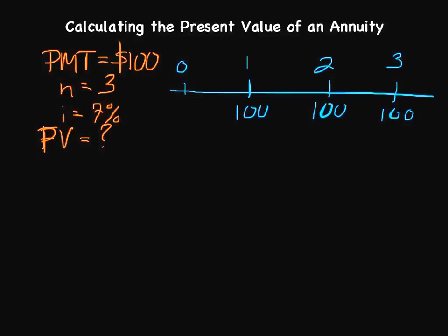We need to take these from the times that we receive them and discount them back to today, which is identified as period 0. That would be this particular point in time.